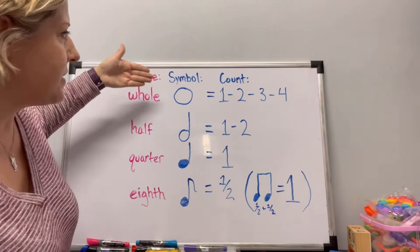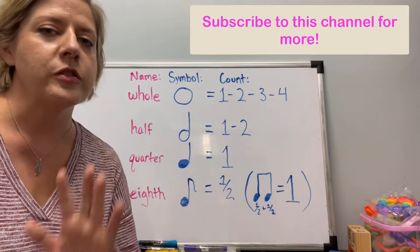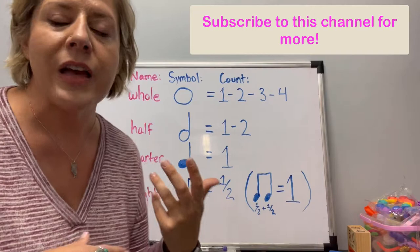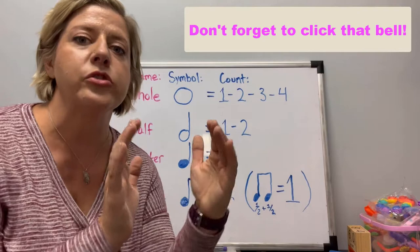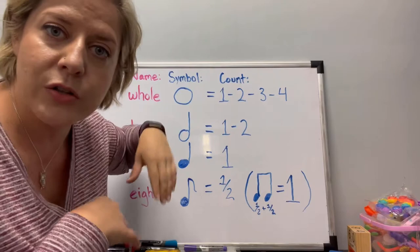Let's start at the top. The first note is just a circle, and that circle is called a whole note. Typically — and I'll explain why I say typically — the whole note gets four counts. We haven't talked about time signatures yet; a time signature tells you how many counts or beats are in each measure of music, but that's for a separate video. Just remember: a whole note looks like a circle and gets four counts: one, two, three, four.